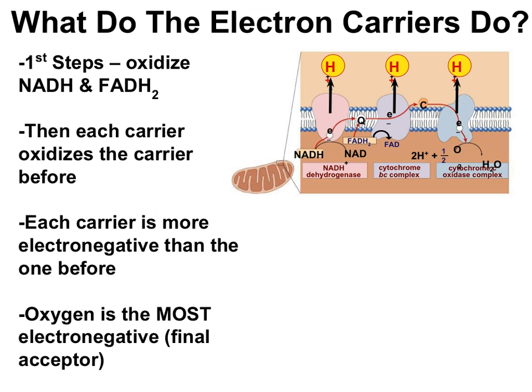Once the high-energy electrons are in the system of the electron transport chain, the high-energy electrons are transferred from one electron transporter to the next in the chain. Each exchange of electrons is a separate redox reaction, and each electron carrier is more electronegative than the electron carrier before it. At the end of the chain, oxygen is the final electron acceptor with the most electronegativity. When oxygen accepts the electrons, it also combines with hydrogen to make the end product of water.